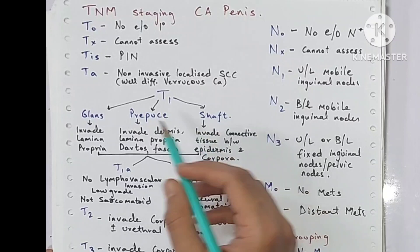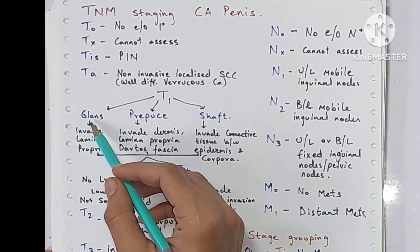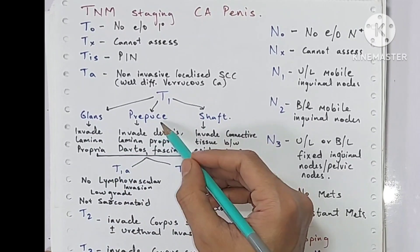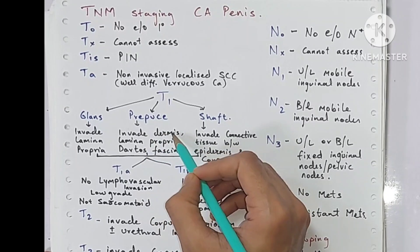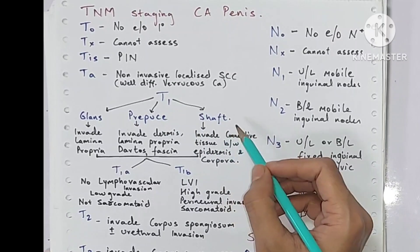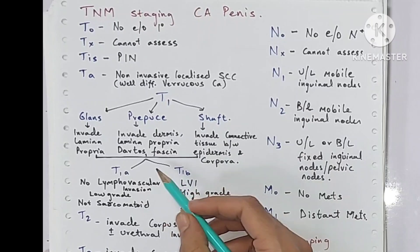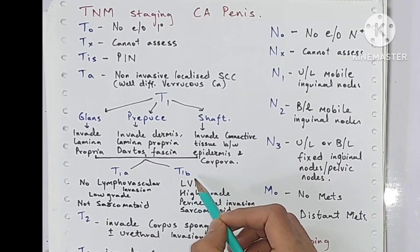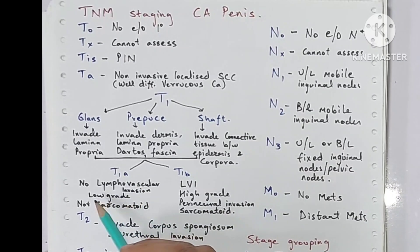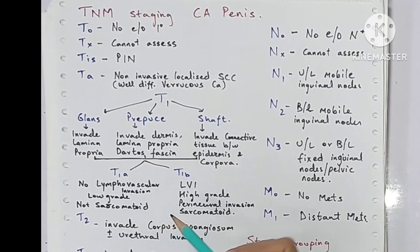T1 depends on the site: in the glans when it invades the lamina propria; in the prepuce when it invades dermis, lamina propria, or dartos fascia; in the shaft when it invades connective tissue between the epidermis and corpora. T1 is divided into T1a and T1b. T1a is when there is no lymphovascular invasion, it is low grade, and there is no sarcomatoid type.